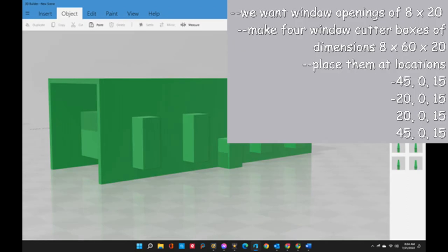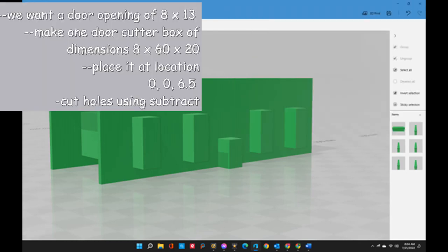Next we need to cut five holes in the sides of the building. Create cube, cubic rectangles shown here, four for the windows, one for the door. And then we will cut them using the subtract command.